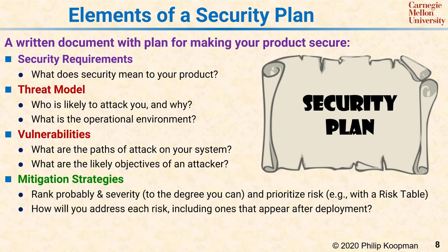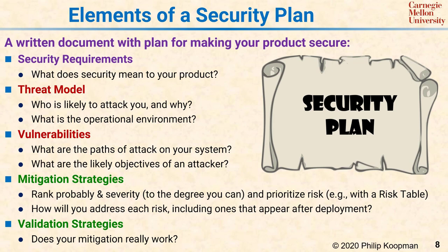Mitigation strategies describe the risk from various attacks, often in terms of probability and severity, and describe which threats and vulnerabilities you plan to mitigate given limited time, budget, and resources. Finally, a validation strategy describes how you plan to make sure the mitigation really works — that typically includes both testing and ensuring that the software quality practices you planned were actually executed.